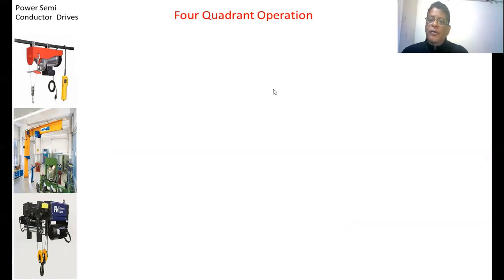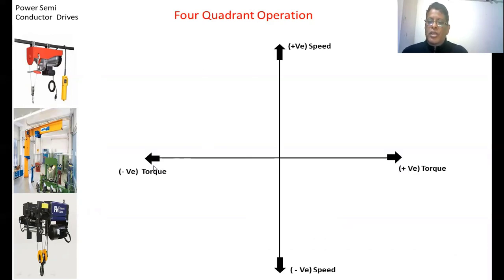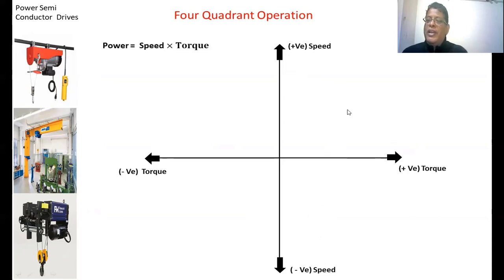Now we look at the physical meaning of the four quadrant operation. On the x-axis we have torque — positive torque and negative torque. On the y-axis we have positive speed and negative speed. We already know the formula: Power equals speed multiplied by torque. In the first quadrant, if speed is positive and torque is positive, the power becomes positive, which means the motor is taking power from the supply and acting as a motor.